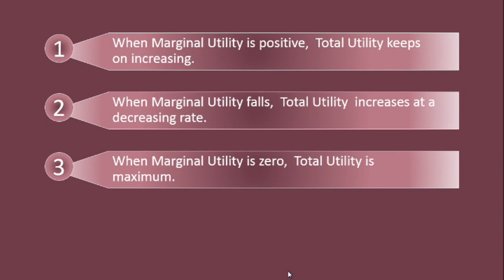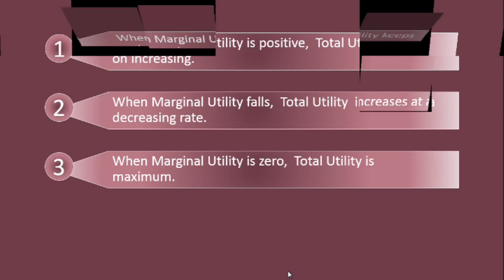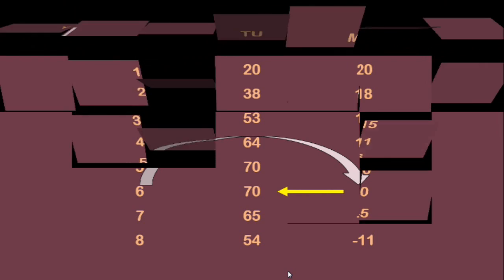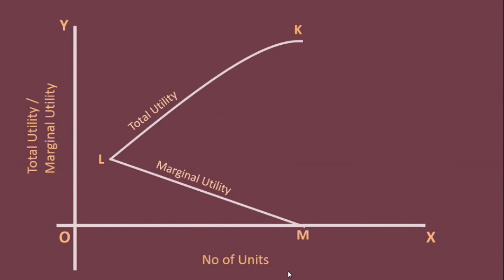Third relation: when marginal utility is zero, total utility is maximum. In the graph, marginal utility becomes zero when the mth unit is consumed. Total utility is maximum at that point.